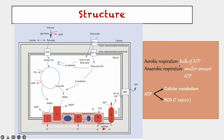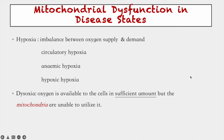Aerobic respiration provides the bulk of the ATP, and a smaller amount of ATP is generated anaerobically. Coming to mitochondrial dysfunction in disease states, we first need to know the difference between hypoxia and dysoxia. Hypoxia means an imbalance between oxygen supply and cellular demand — decreased cardiac output leads to circulatory hypoxia, decreased hemoglobin leads to anemic hypoxia, and decreased oxygen leads to hypoxic hypoxia. Dysoxia is a state where oxygen is available to the cell in sufficient amount but the mitochondria are unable to utilize it.